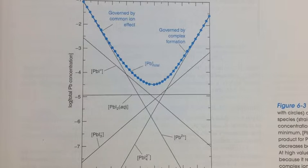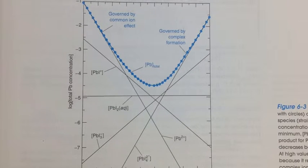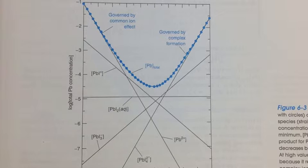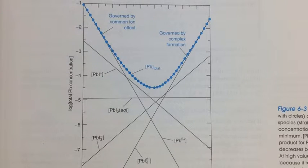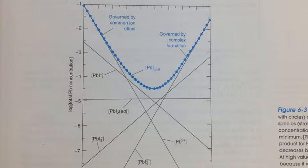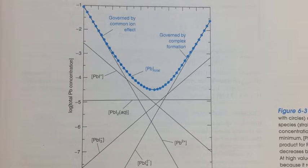It is important to note the logarithmic scales on the graph. It is also important to note that in chemical equilibrium, all equilibria are satisfied simultaneously.